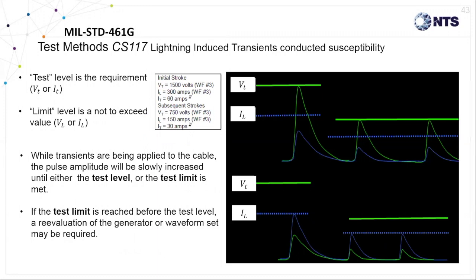When applying these lightning transients, it's important to understand the difference between the test requirements and limit level. The lightning calibration is used to ensure that the generator is capable of meeting the voltage and or current waveform test requirement. But as the impedance of that cable being tested is likely to fall somewhere between the open condition and the short condition, the actual lightning generator setting will need to be adjusted gradually in order to prevent overtesting.